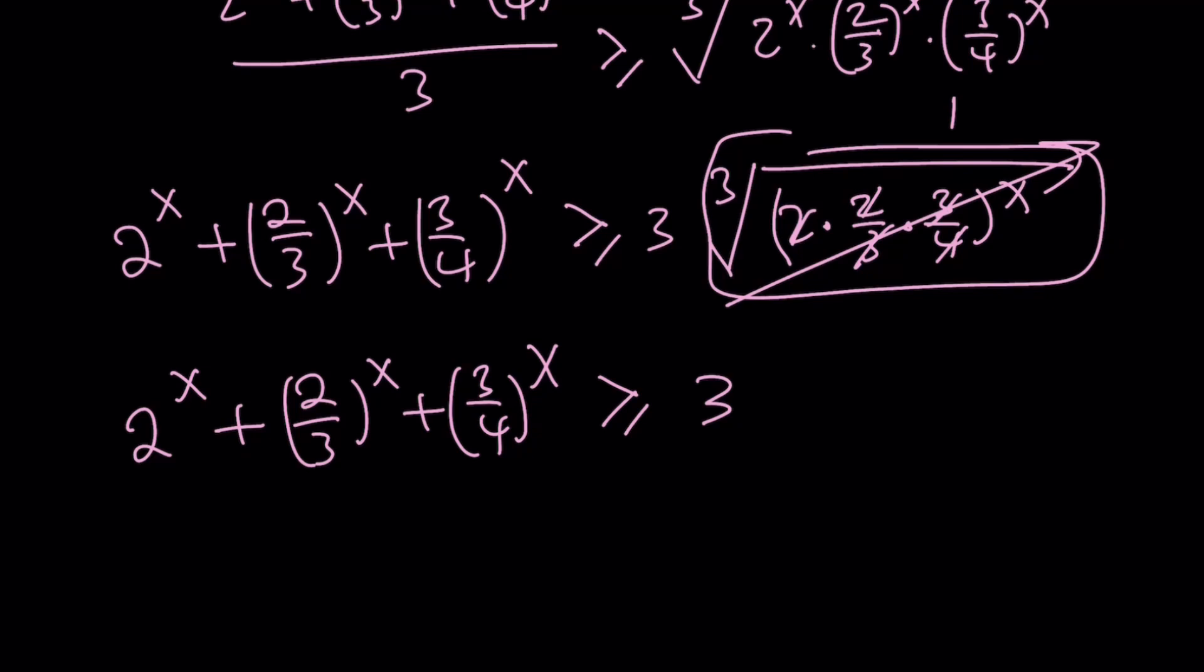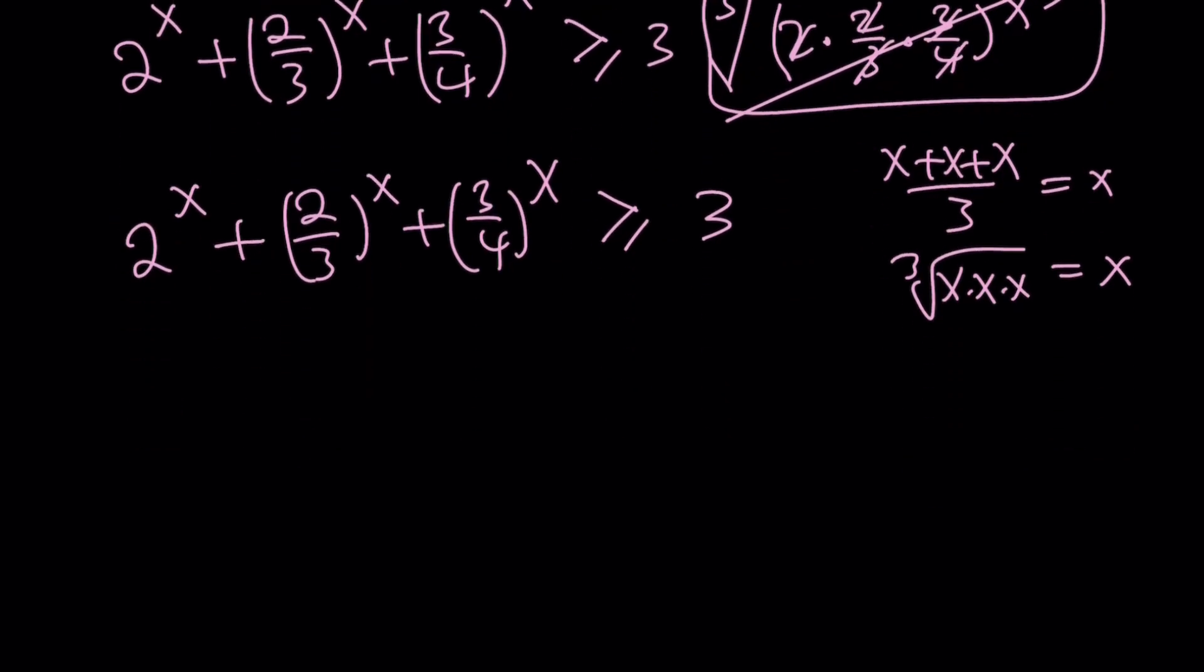If you average x, x, x divided by 3, or cube root of x times x times x, you get the same thing. In both cases, you get x, one of the numbers. So this implies that 2^x = (2/3)^x = (3/4)^x. But when are these things all going to be equal? Obviously, when x is equal to 0.